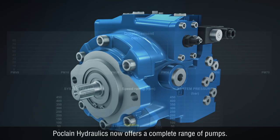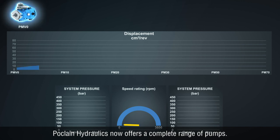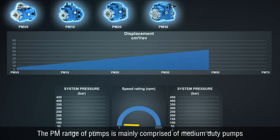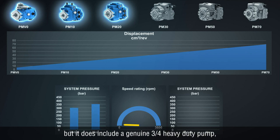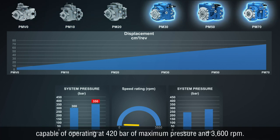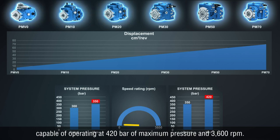With six sizes, Poclain Hydraulics now offers a complete range of pumps. The PM range is mainly comprised of medium-duty pumps, but it does include a genuine three-quarters heavy-duty option capable of operating at 420 bar of maximum pressure and 3600 revolutions per minute.